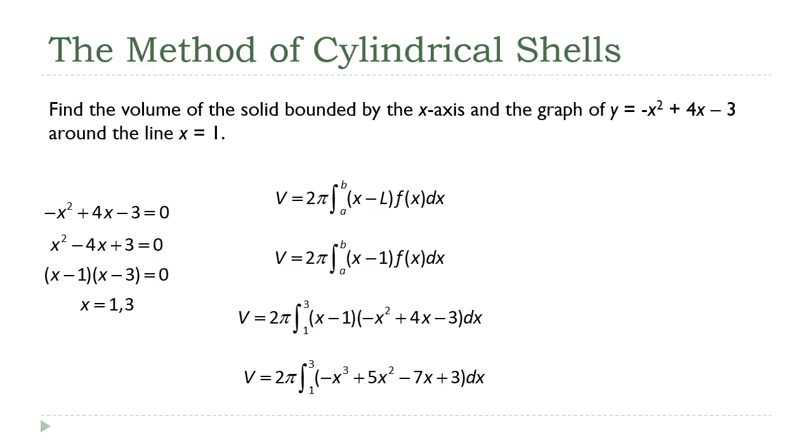And we can do this using the power rule, right? Four times, once for each term. And this turns into volume equals two pi negative x to the fourth over four plus 5x cubed over three minus 7x squared over two plus three x. And we're going to evaluate that from one to three.